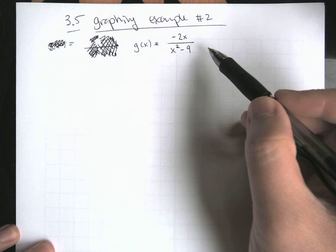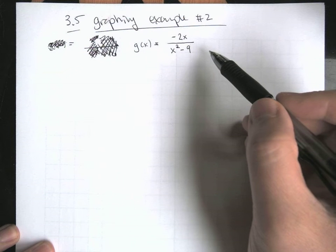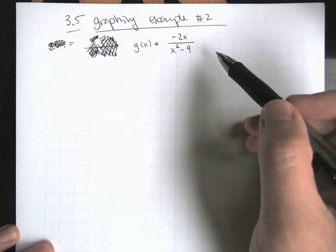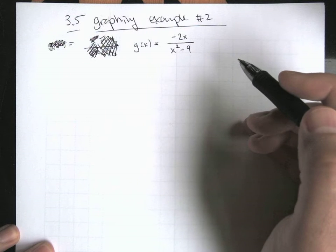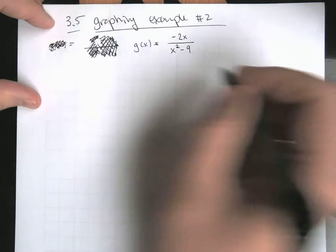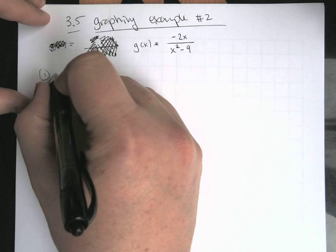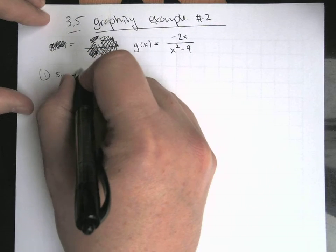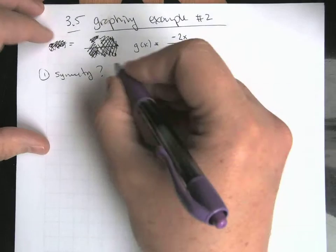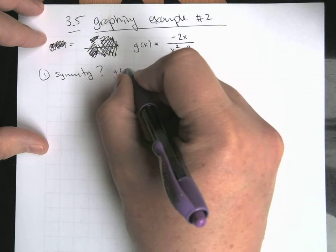So g of x is negative 2x over x squared minus 9. Let's run through this. Same thing, same steps. Let's go. Step number one, let's check for symmetry. Symmetry, question mark. So this is subbing in a negative x.